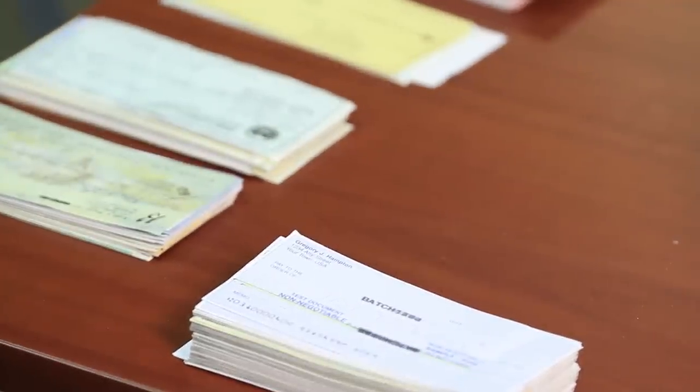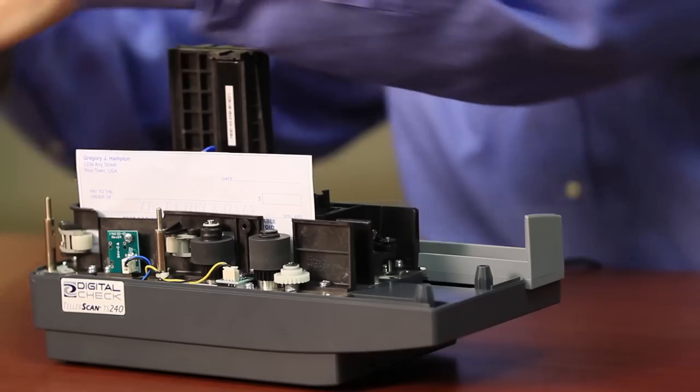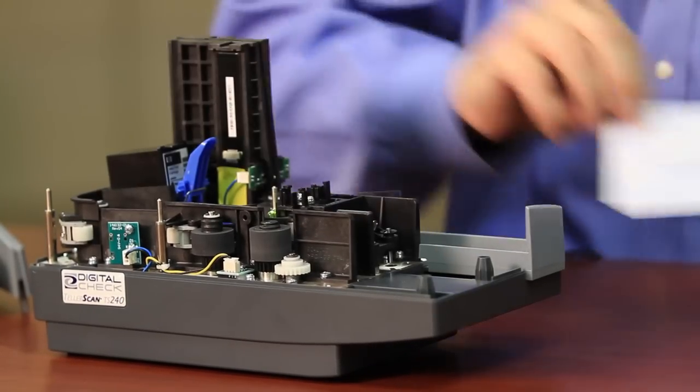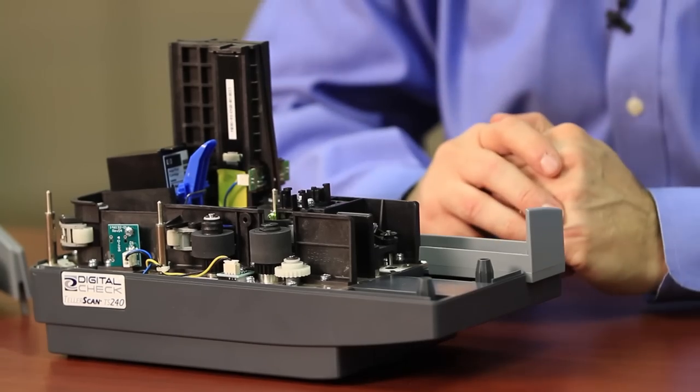If the scanner were to jam, you have a couple of options of how to remove it. One is if there's an eject button available on the application that would run the motors to cycle the item through the path. The other option is if it's stuck in the path, you can simply remove the cover set, grab the item, and carefully work the item vertically out of the path.